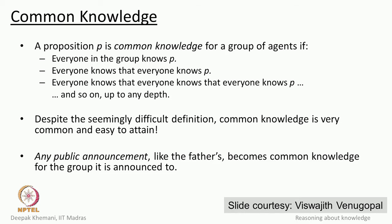Let us look at the notion of common knowledge. We say that proposition P is common knowledge for a group of agents if: first, everybody knows P; then everybody knows that everybody else knows P; then everybody knows that everyone knows that everyone knows P — with an arbitrary amount of nesting. Common knowledge occurs, for example, when the father made a public announcement, because everybody knows it and everybody knows that everybody else knows it.